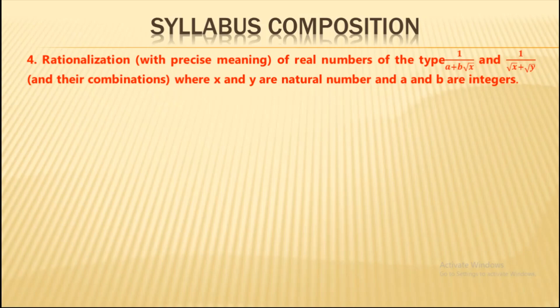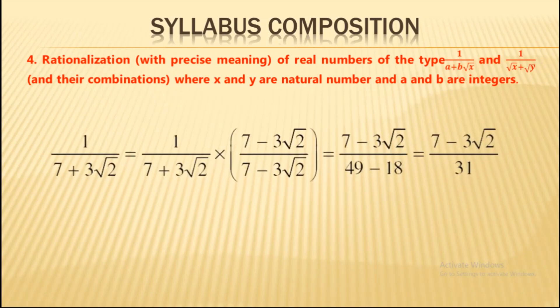Another topic is rationalization of real numbers of the form 1/(a + b√x) and 1/(√x + √y). Here both rational and irrational numbers appear. We will rationalize the denominators of such expressions, where x and y can be any natural numbers and a and b can be integers.